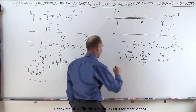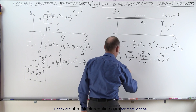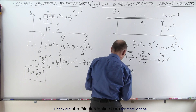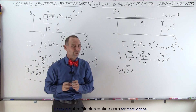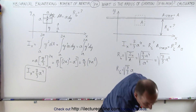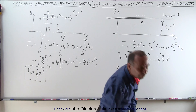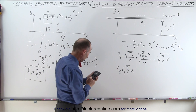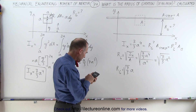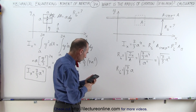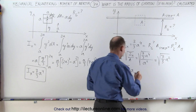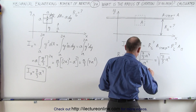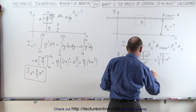Simplified, the radius of gyration equals the square root of 7/3 times A. The square root of 7/3 is approximately 1.53, so the radius of gyration is approximately 1.53 times A.